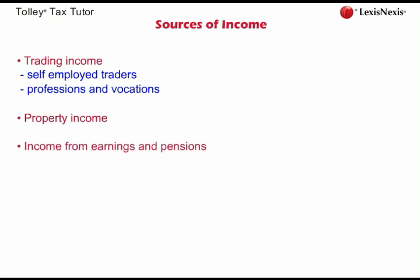Next, there is a very important type of income called income from earnings and pensions. Earnings covers salaries, bonuses, and non-cash benefits, which we will look at in detail in later sessions. There are various types of savings and investment income; the most common is interest arising from UK banks and building societies, which we call interest income. Another type of investment income is dividends received from companies.